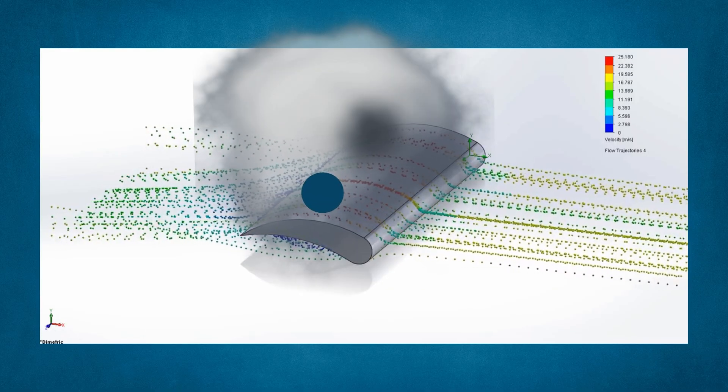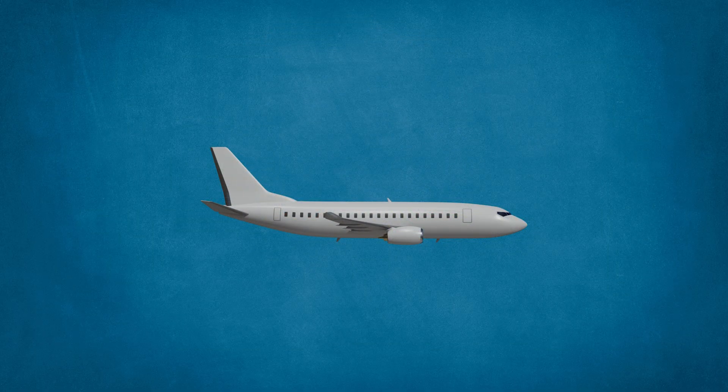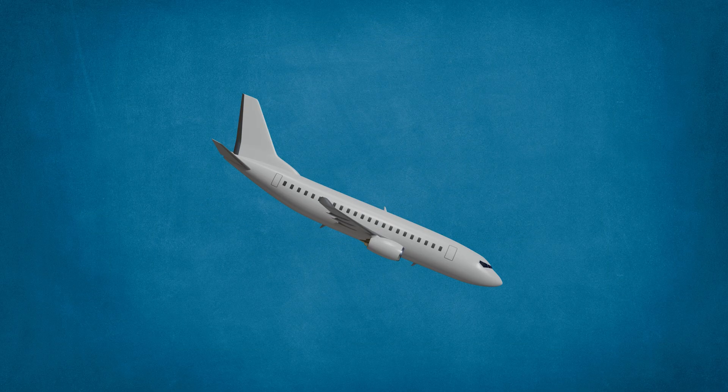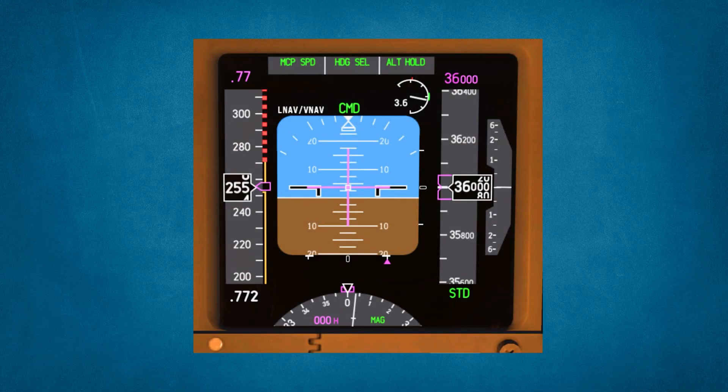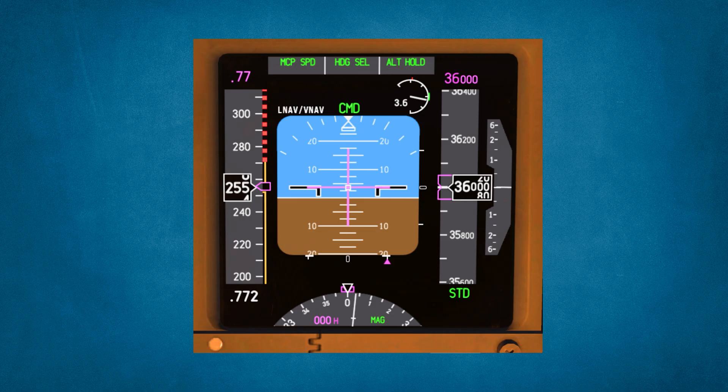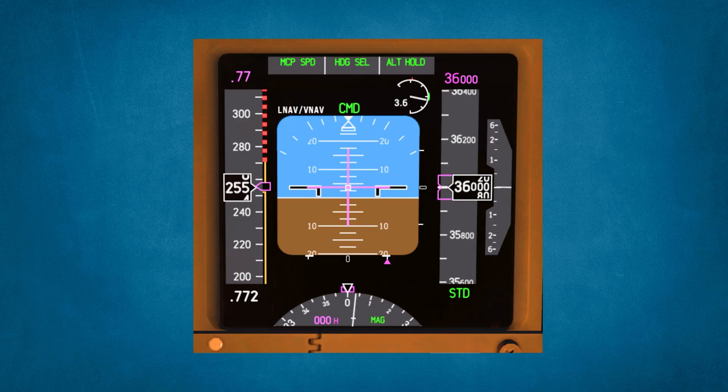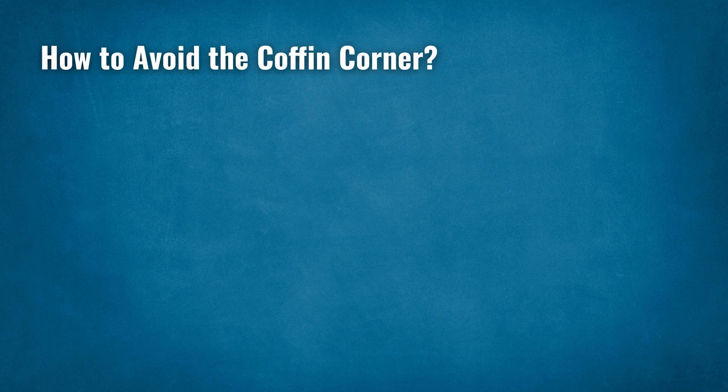The center of lift also shifts back, making the nose of the aircraft want to pitch down as it approaches critical Mach number. The speed just below this is the MMO, or maximum Mach number operating speed, and that speed is just within the right side of our coffin corner pyramid.